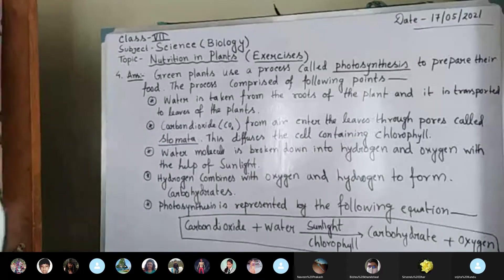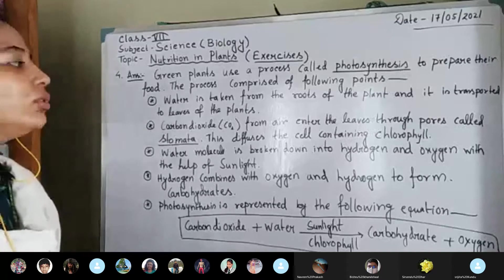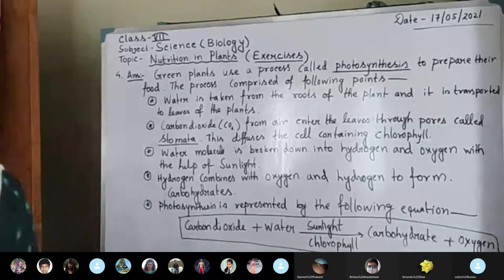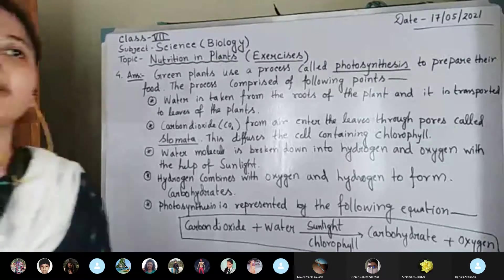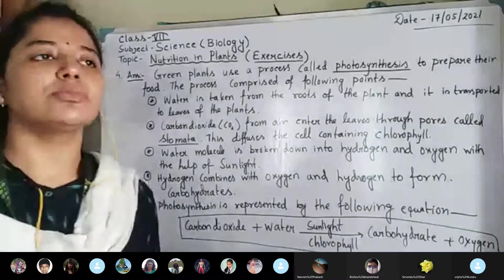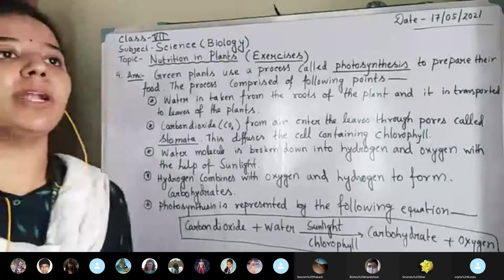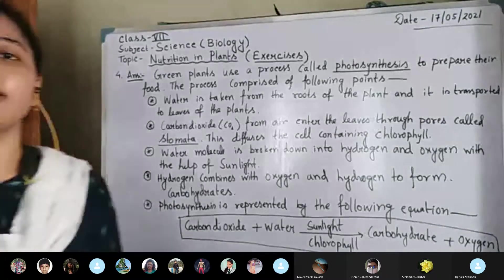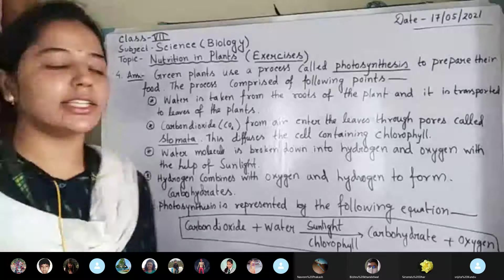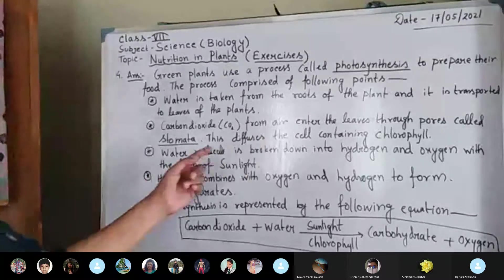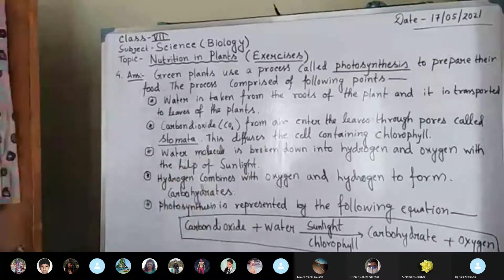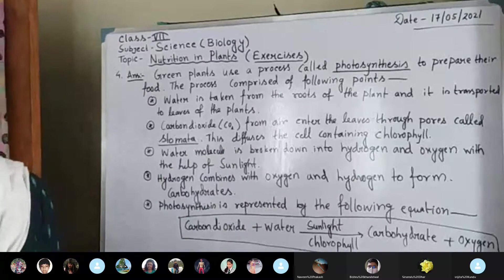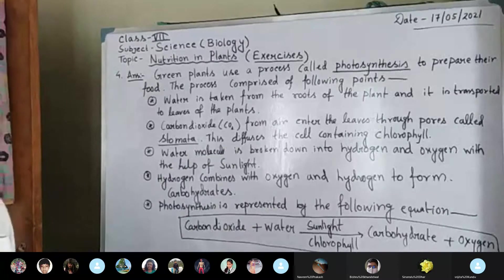The next point is carbon dioxide. As you know, they take in carbon dioxide from the air that enters the leaves through very tiny small pores known as stomata. Stomata is mainly for gaseous exchange, and this diffuses into the cells containing chlorophyll or chloroplast present in the leaves.